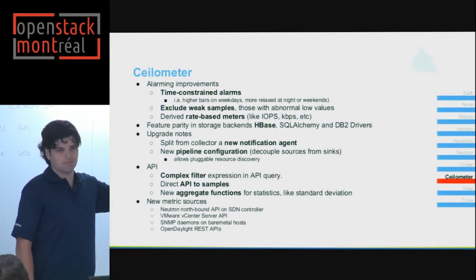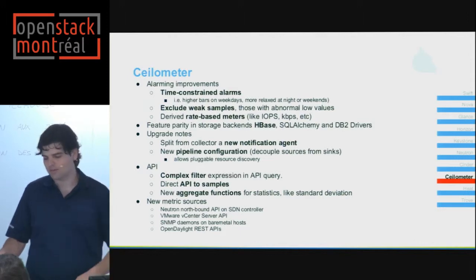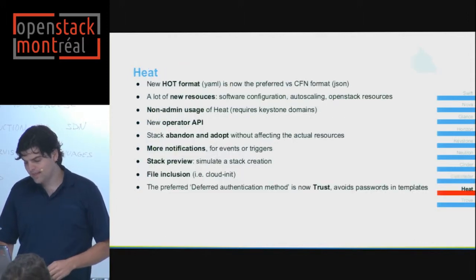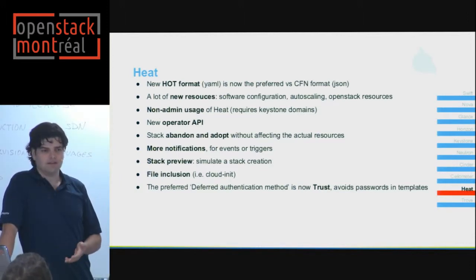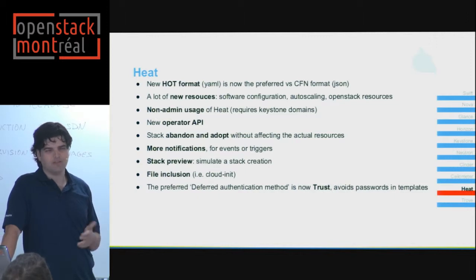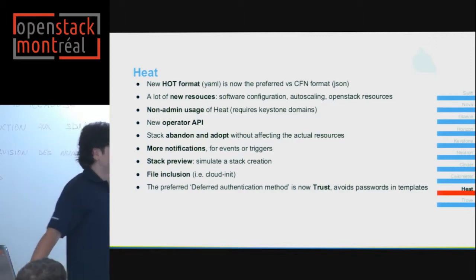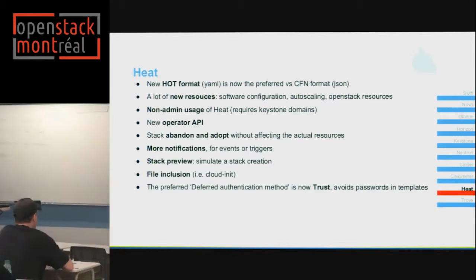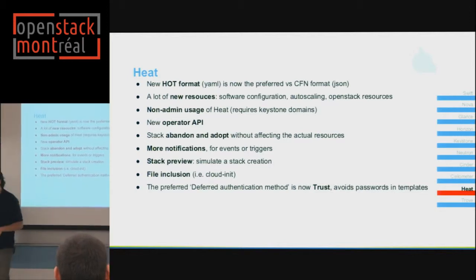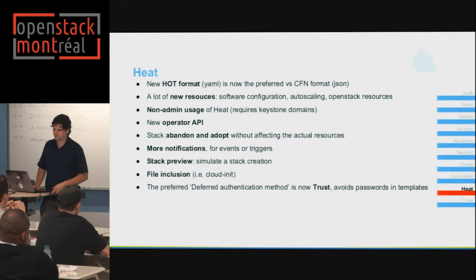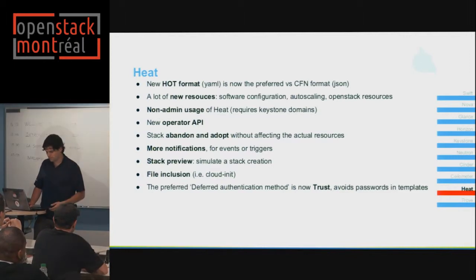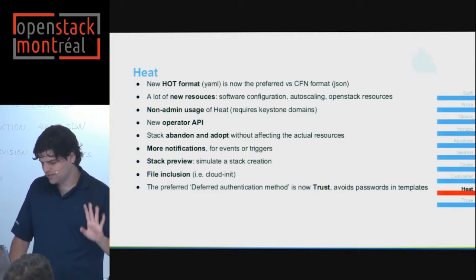Heat is the orchestration mechanism — related to Amazon CloudFormation. It was previously compatible with CloudFormation, but now they want you to move configuration files from JSON format to YAML. The old JSON format will probably disappear in months to come. New features include new resources, a new group mechanism allowing non-admins to use it, and more notifications.